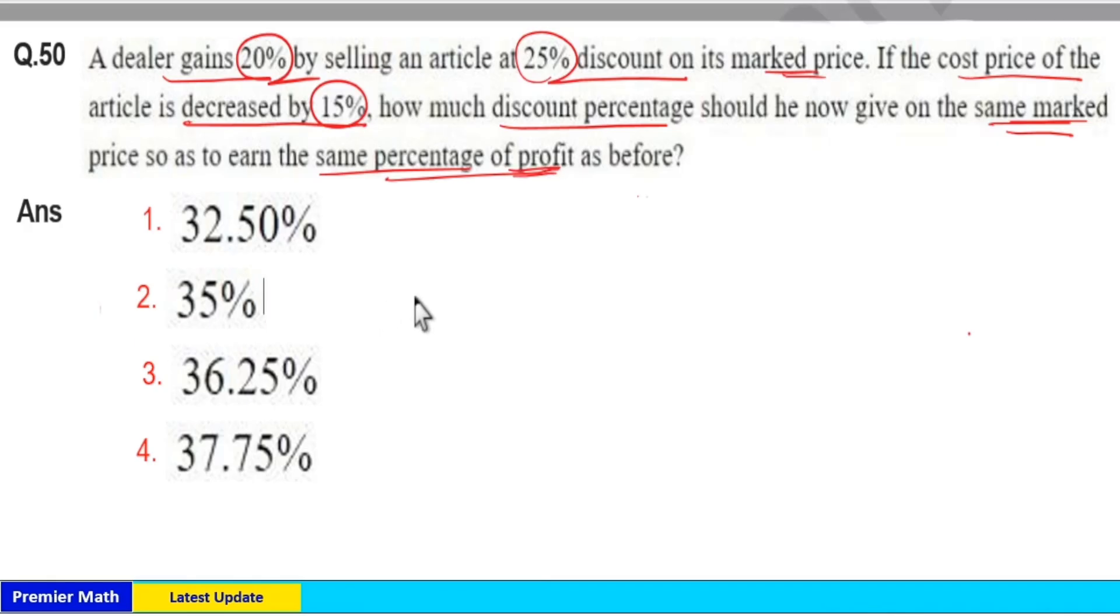Here market price and profit are the same in both cases. Consider in the first case cost price is 100 rupees. Gain of 20% means profit is 20. So selling price here is equal to 100 plus 20, which is 120 rupees.